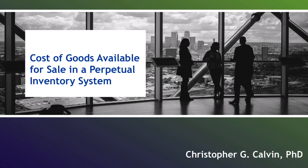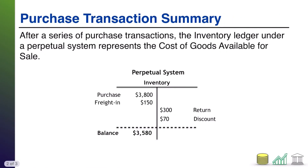Hi everyone. In this video I'm going to quickly summarize the idea of cost of goods available for sale when looking at a perpetual inventory system ledger. When you buy inventory, that's known as the cost of goods purchased — whatever you pay for that inventory.